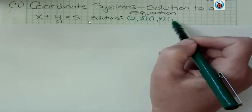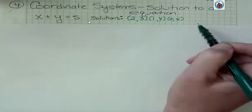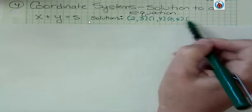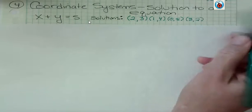What's something else? Well, if x was 0, y could be 5. What's another one? Well, we could flip-flop these. x could be 3 and y could be 2. We could flip-flop that one. x could be 4 and y could be 1.